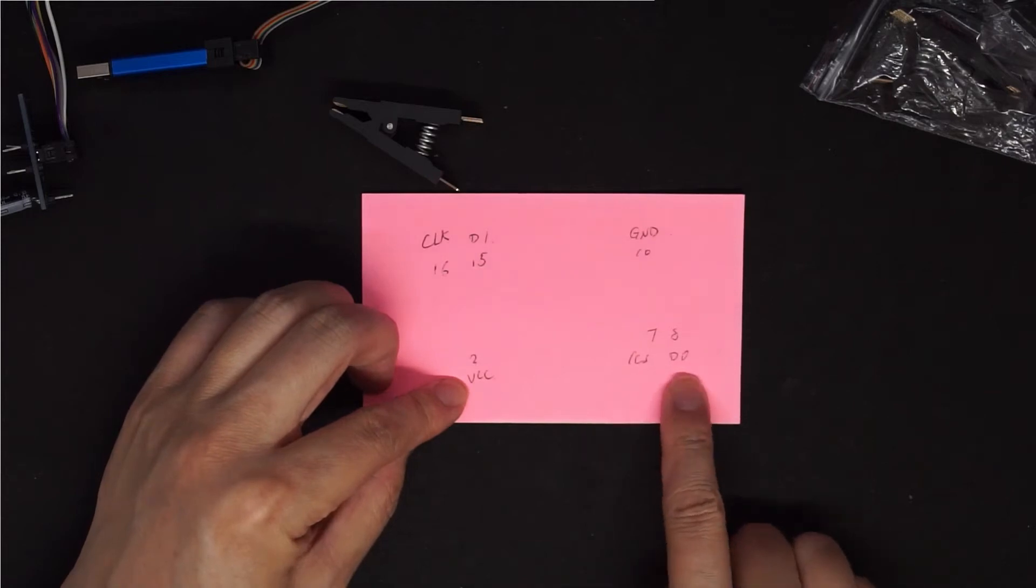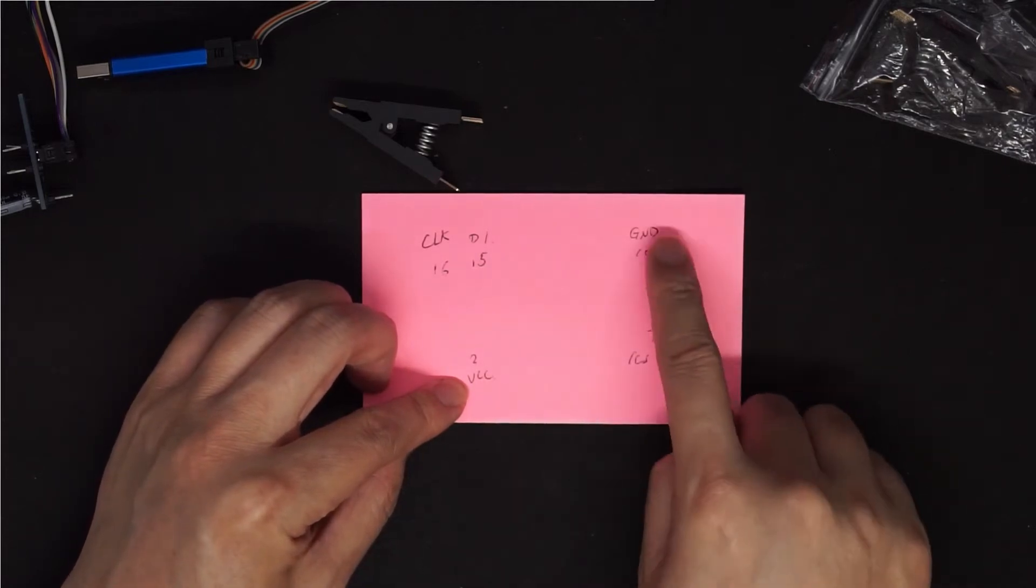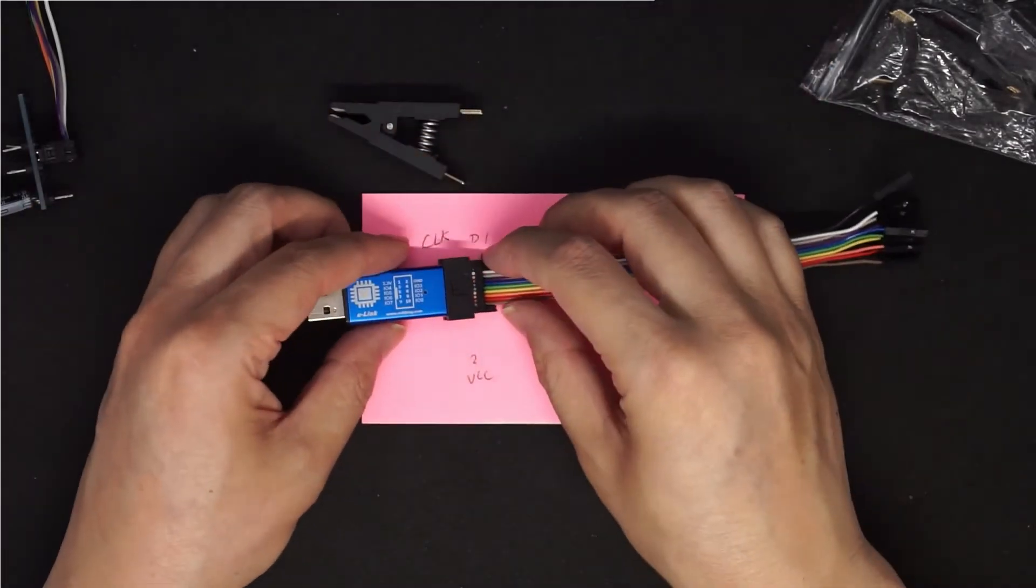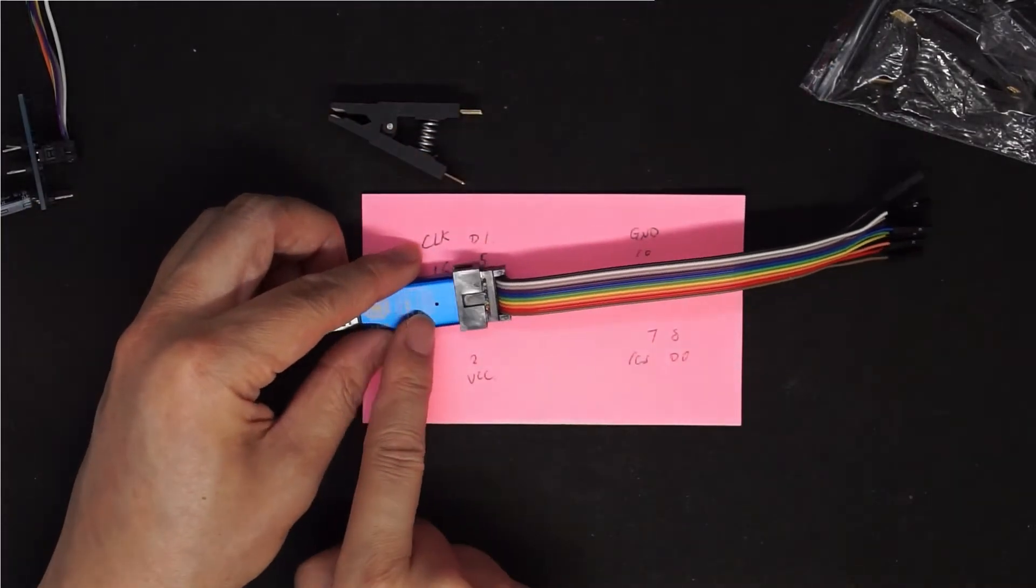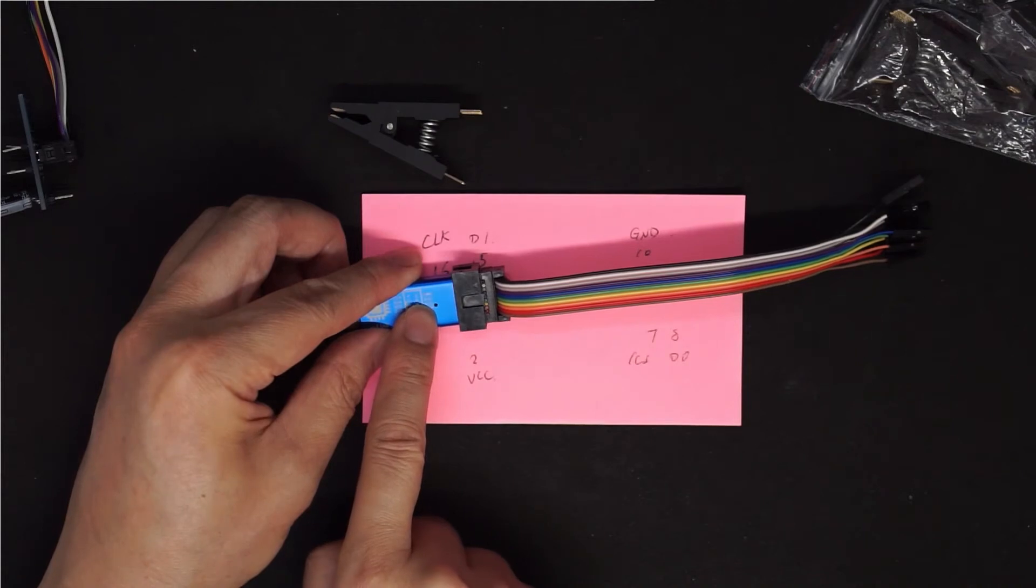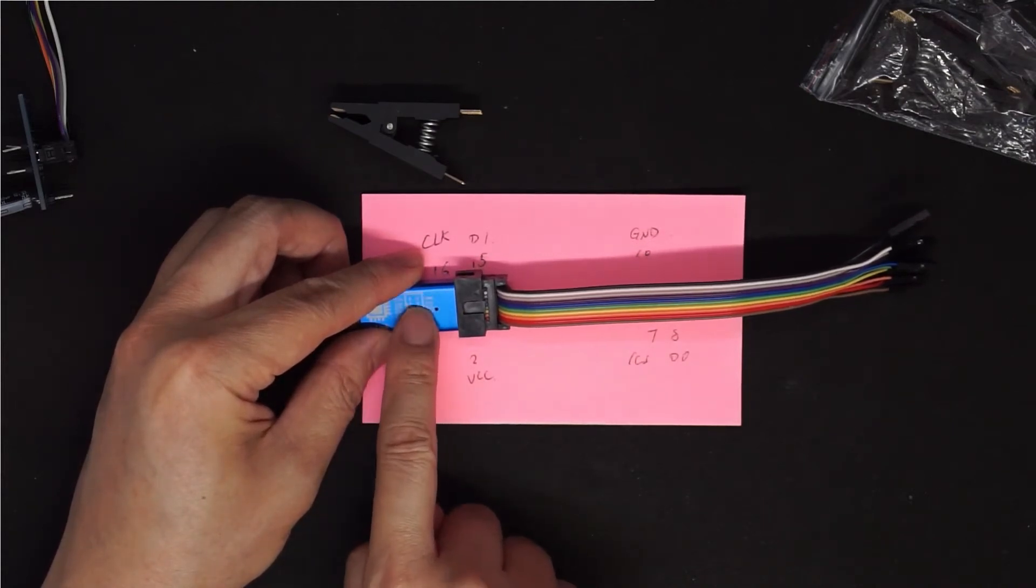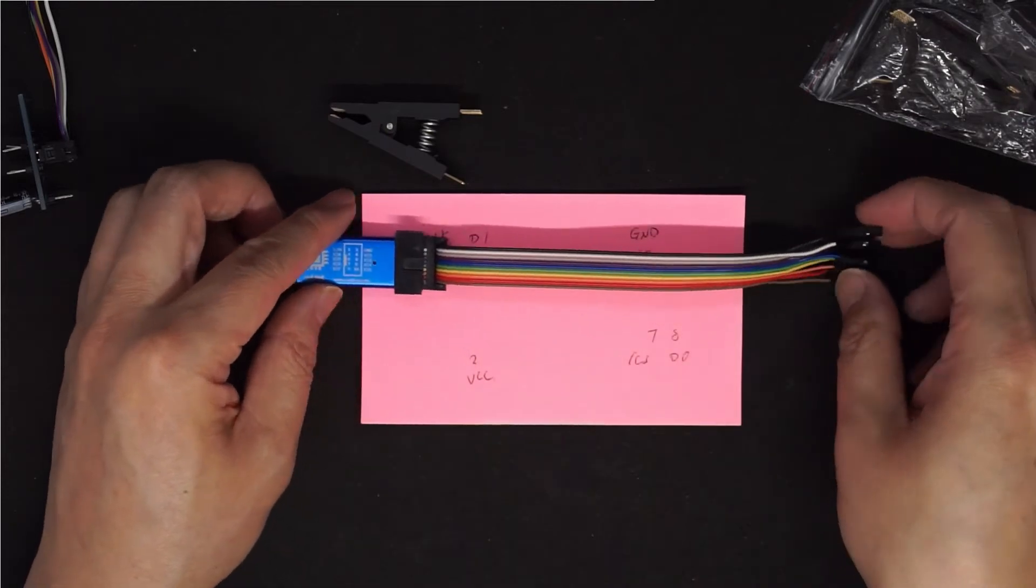The diagram here I already drew shows I have the clock, DI, ground, power, CS, and DO - the six pins I need to connect. On the U-Link NT it's all the way to the right side: IO0, IO1, IO2, IO3, ground, and 3.3V. So there are six pins from this U-Link NT need to be connected.